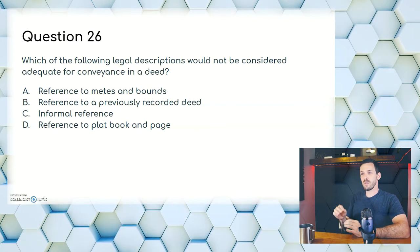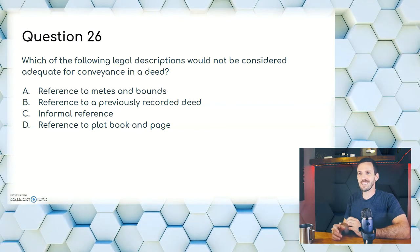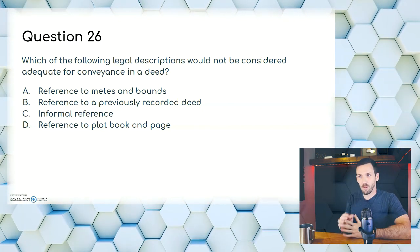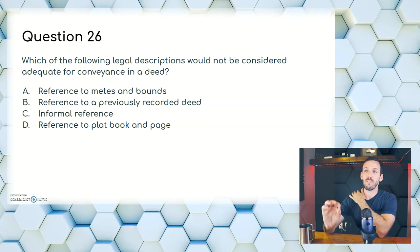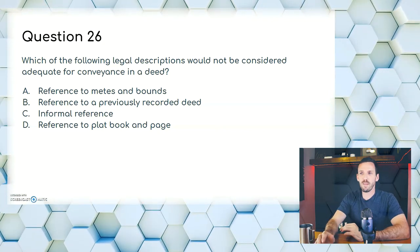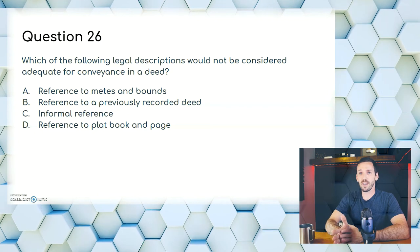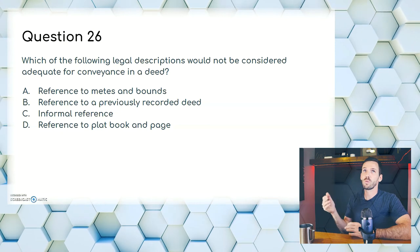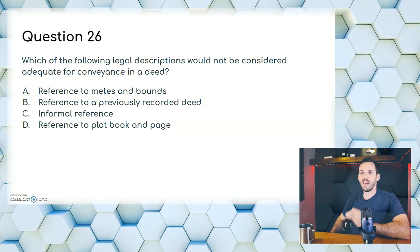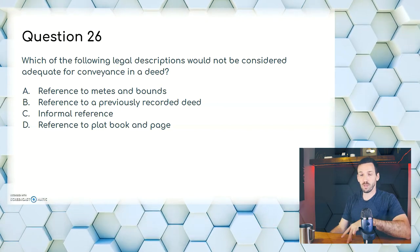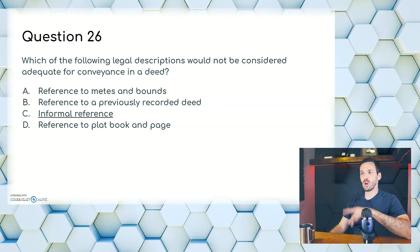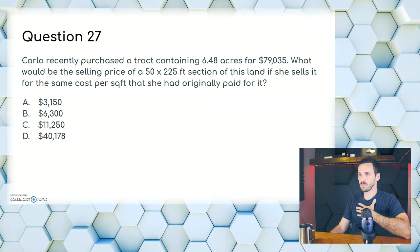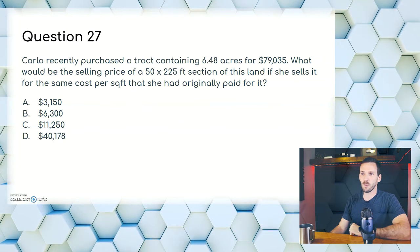Question twenty-six: which of the following legal descriptions would not be considered adequate for conveyance in a deed? A, reference to metes and bounds; B, reference to a previously recorded deed; C, informal reference; or D, reference to plat book and page. Informal reference is something like an address — '123 Main Street.' That is not adequate. A deed is a very formal document and should be very precise. The answer — the one that would NOT be considered adequate — is C, informal reference.